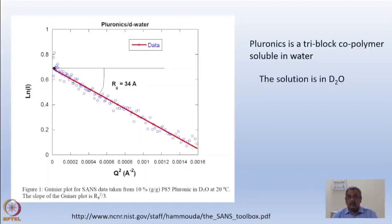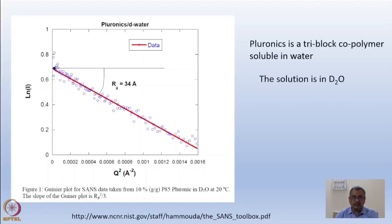In the last module, I talked to you about Guinier approximation and showed you how we can get hydrodynamic radius or radius of gyration of one example of the Pluronics.